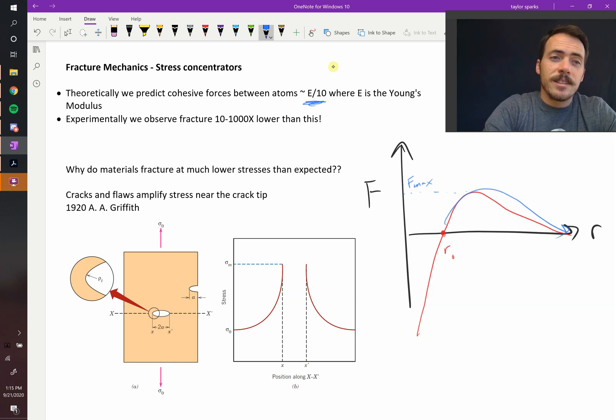However, in practice, experimentally, we observe that fracture occurs 10 to 1,000 times lower than this. You get fracture occurring way below its theoretical strength. The atoms, we know how strong that bond should be, but when we go and actually test these things in real life, they're much, much weaker. So what on earth is going on?